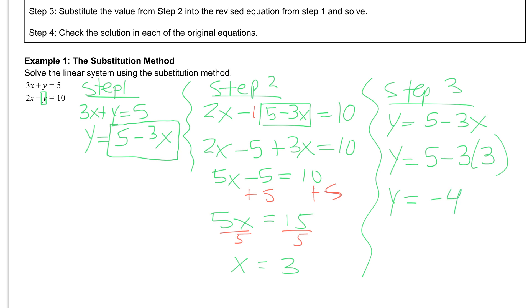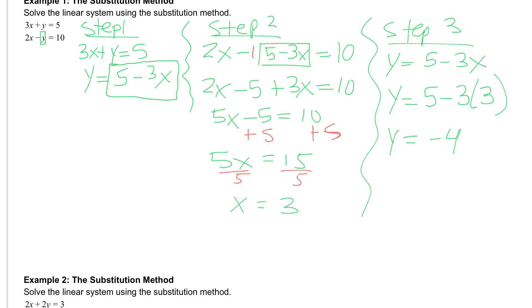So my answer, I can write it in two different ways. I can write it as an ordered pair. My ordered pair always goes x and then y. Or you can simply write x is equal to 3 and y is equal to negative 4.